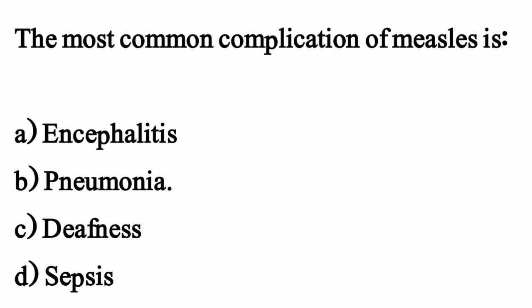The most common complication of measles is? The correct option is option B: Pneumonia.